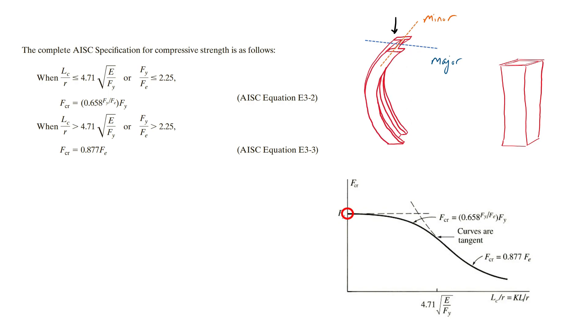These equations are based on experimental and theoretical studies that account for the effects of residual stresses and an initial out-of-straightness of L over 1500, where L is the member length. It is recommended that LC over R is kept below the value 200, because compression members that are any more slender will have little strength and will not be economical.